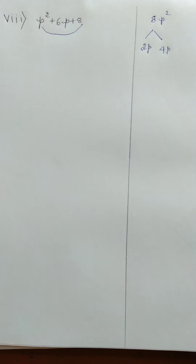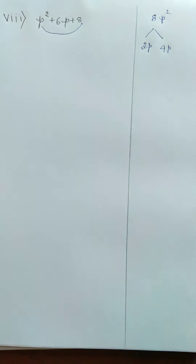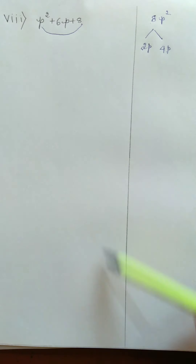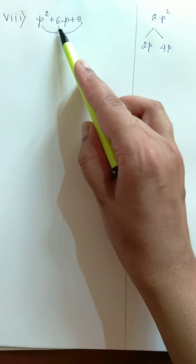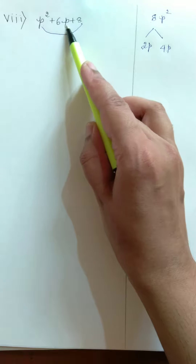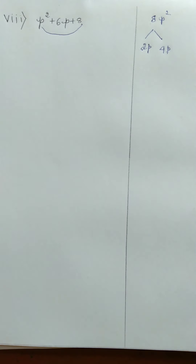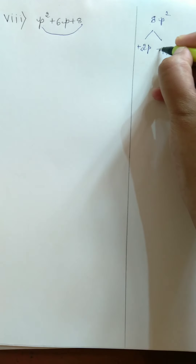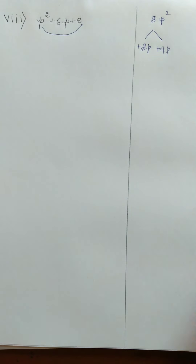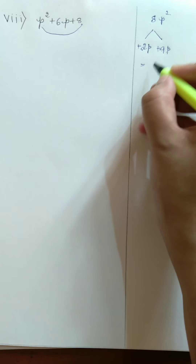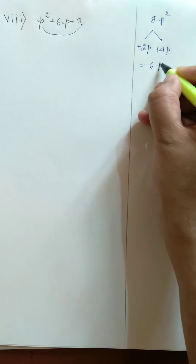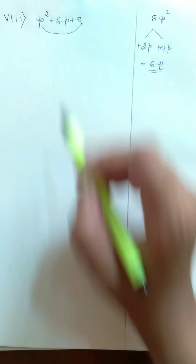We got the product of the factors of 8. Now we have the middle term 6P. We apply a sign — either positive or negative — to these factors such that we get the middle term 6P. Consider 2P and 4P. If we apply positive sign to both factors, then 2P plus 4P equals 6P. We got the middle term 6P.